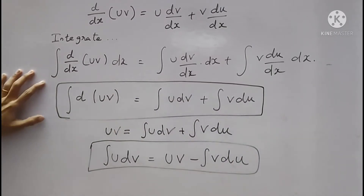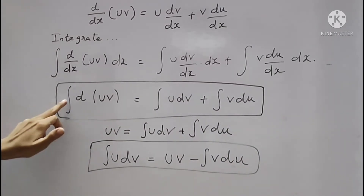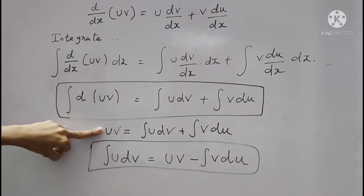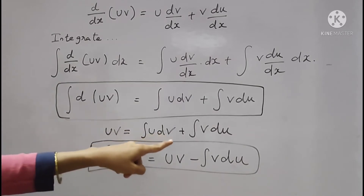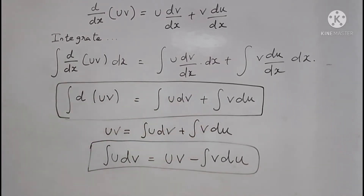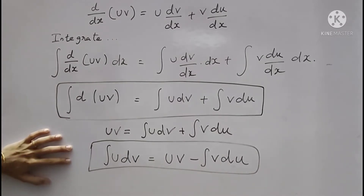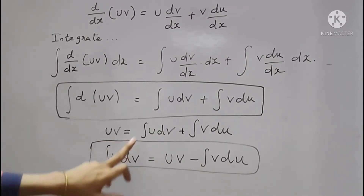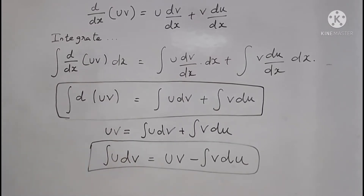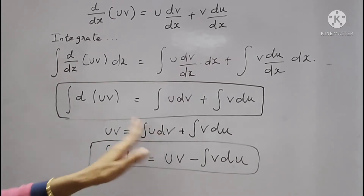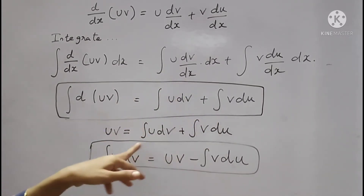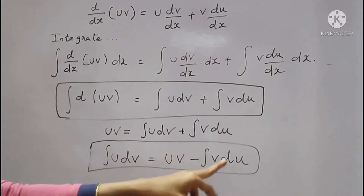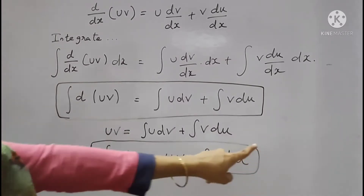This is the formula — the final formula. So integral of d(uv) is equal to integral of u dv plus integral of v du. So this way we will apply the u dv method. We will apply the formula and if we interchange, u dv is on one side, that gives us: integral of u dv equals uv minus integral of v du. This is the important formula.